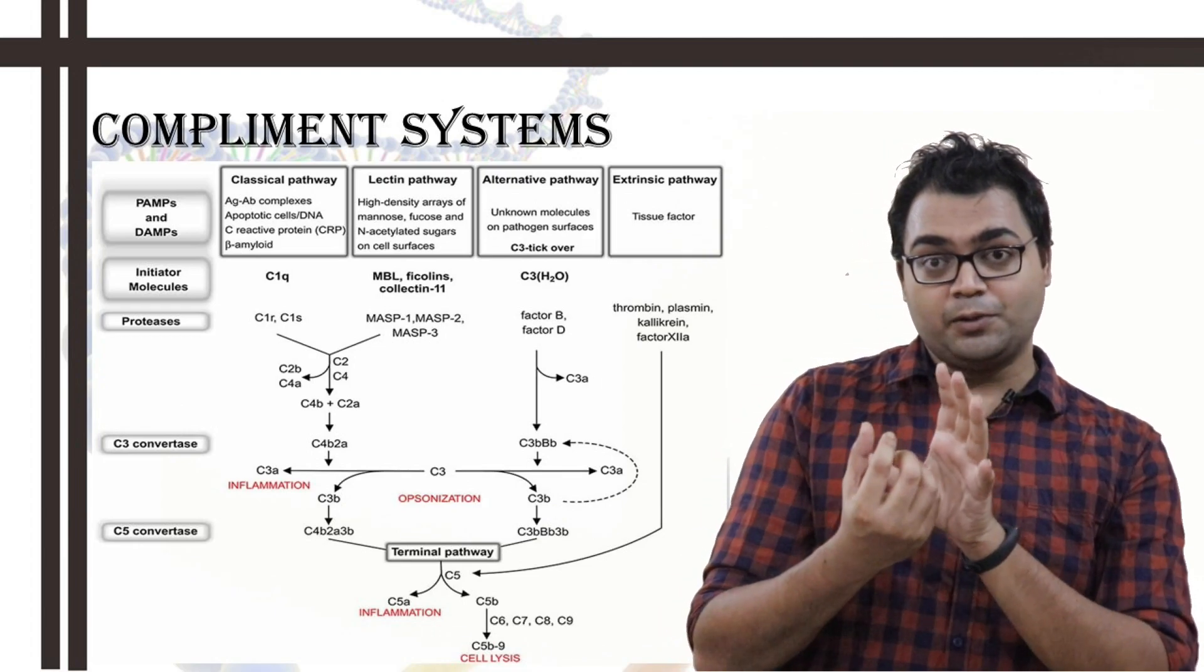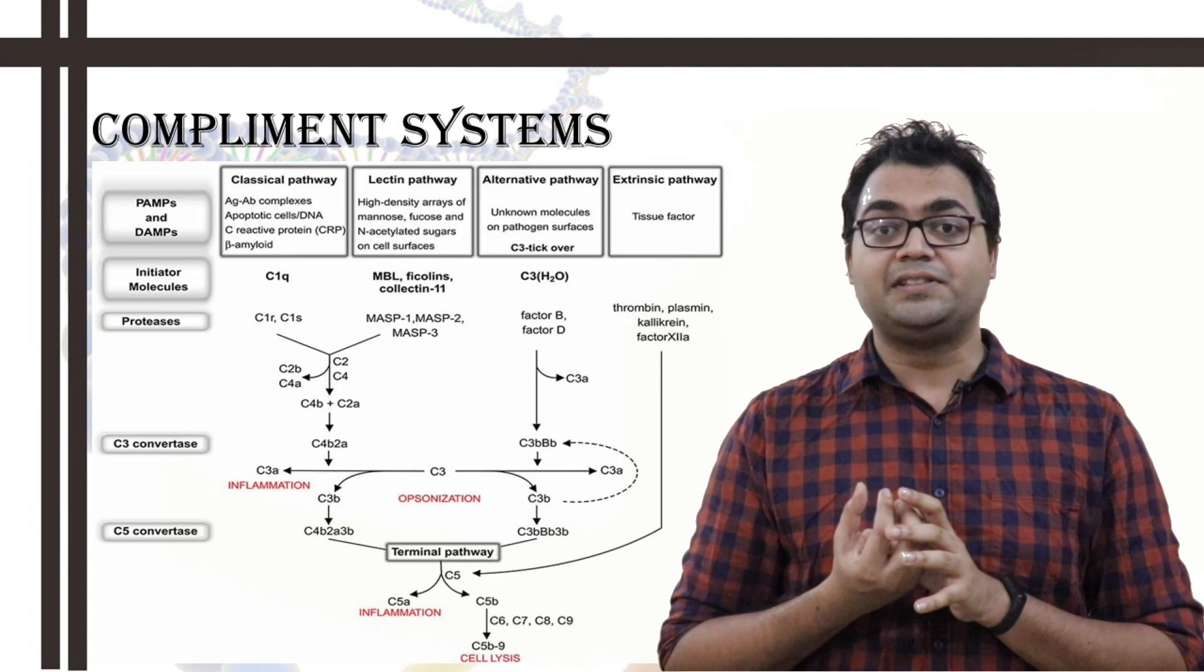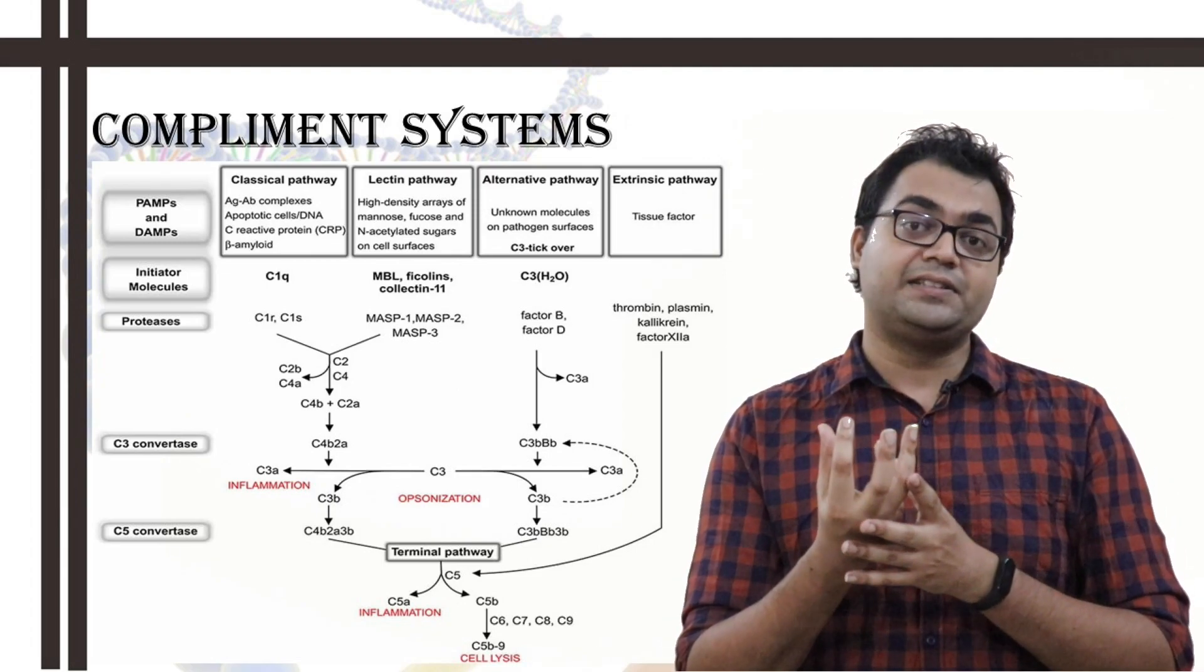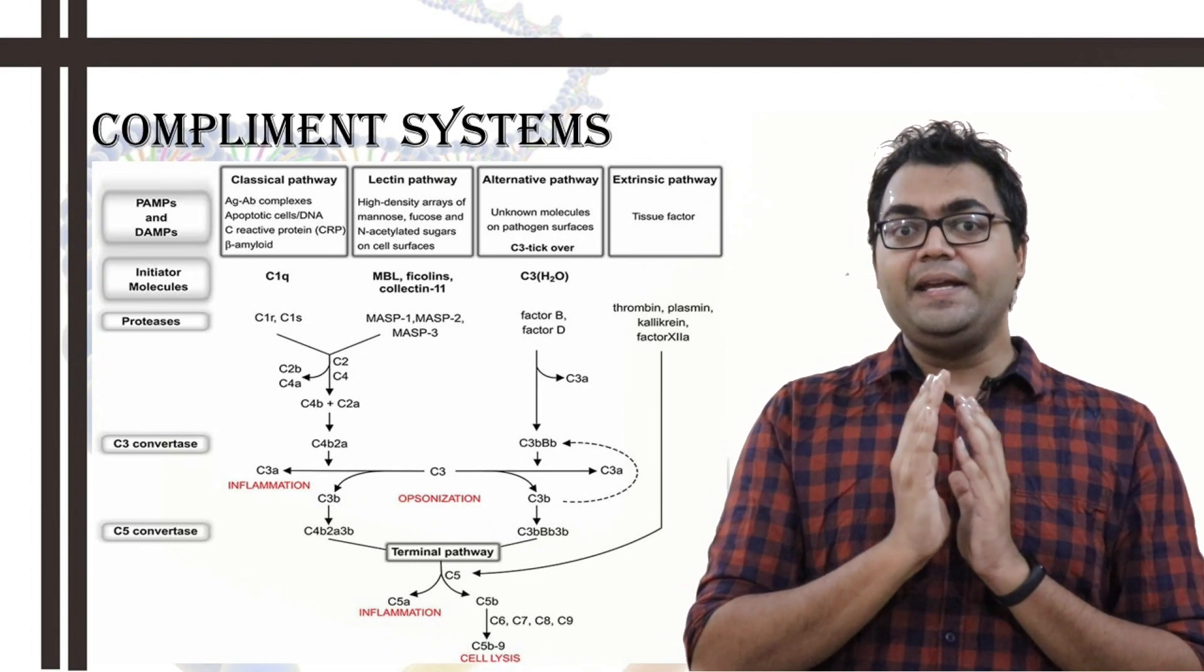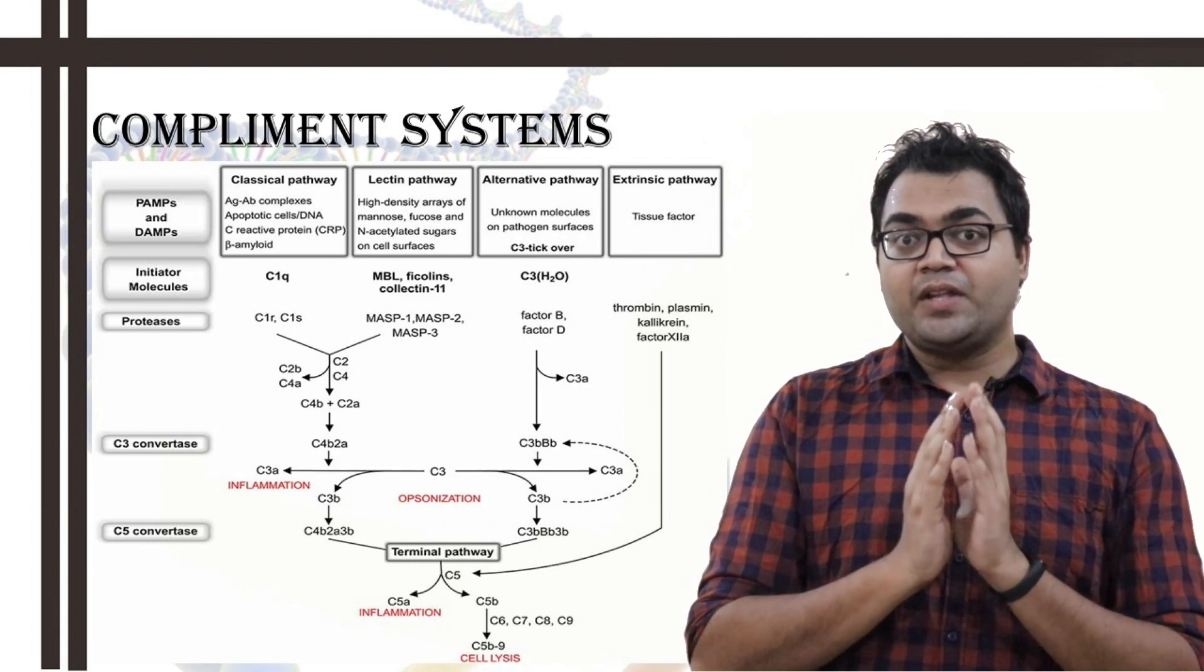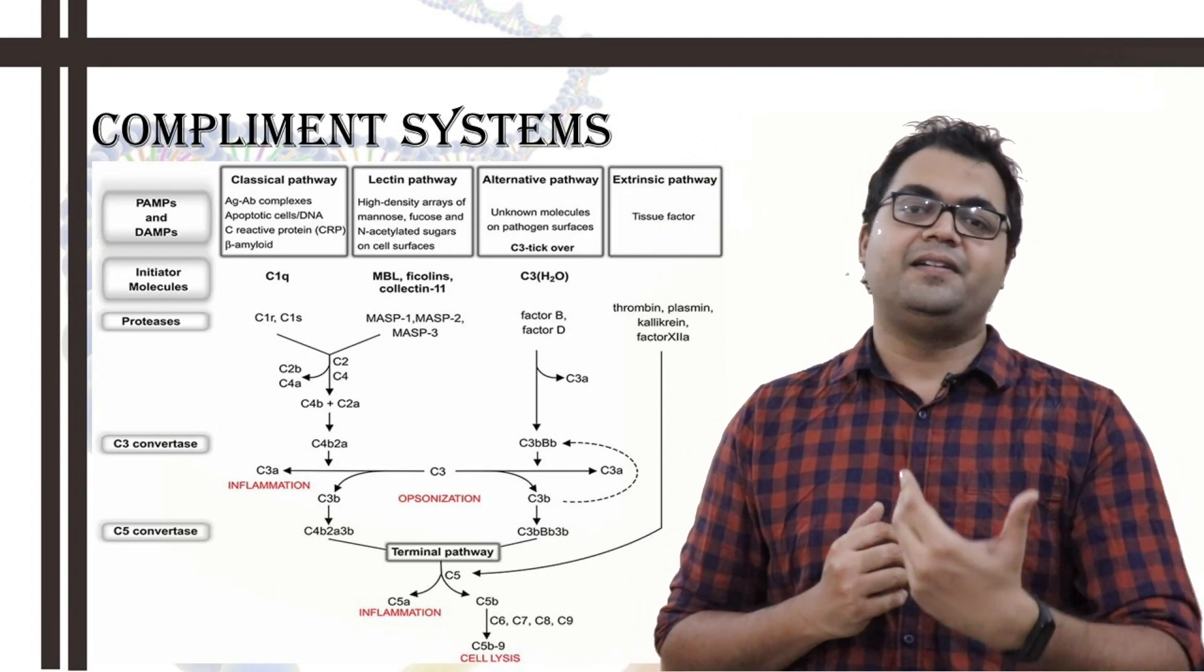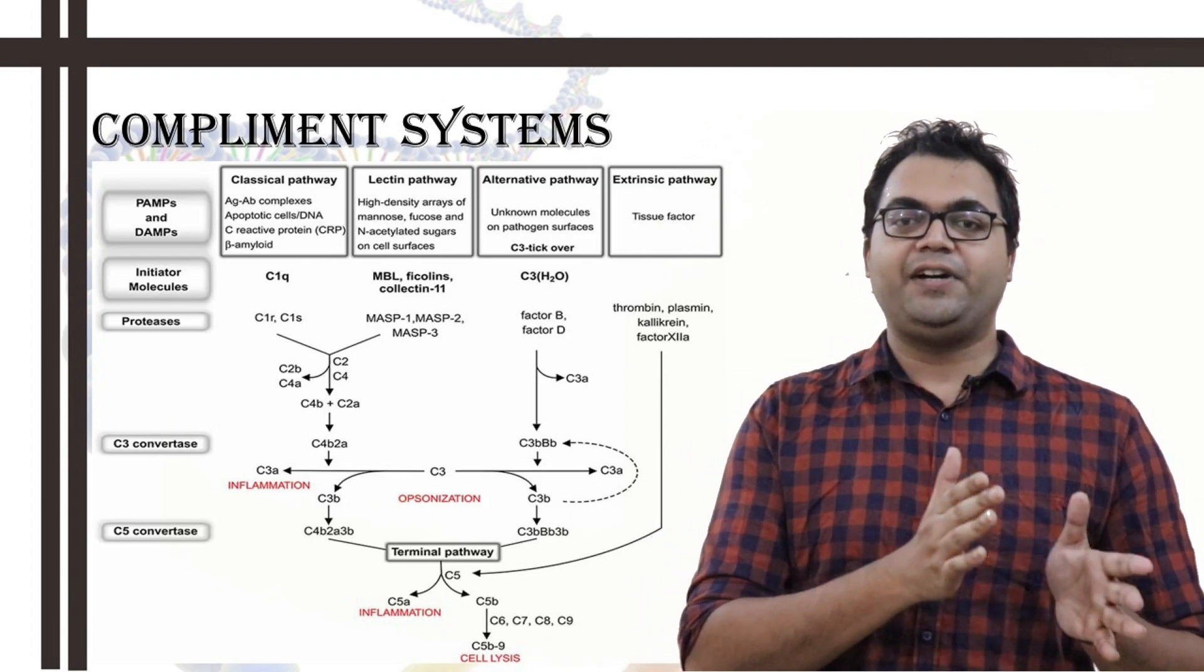Now, C3b is a great opsonizing agent, which can bind to the macromolecule and can function and can bind to the C3b receptor present on various phagocytes like macrophages, dendritic cells, monocytes, and can cause the phagocytosis. And whereas, C3a is an anaphylatoxin, it's a great anaphylatoxin. Now, the C4b2a3b is known as C5 convertase.